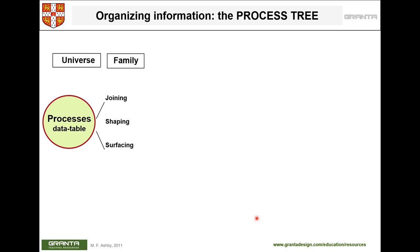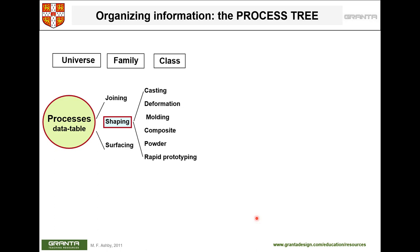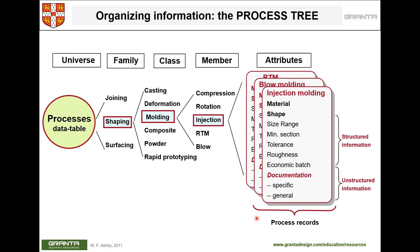Similar to materials, manufacturing processes are organized in a family hierarchy. Under shaping, you have different types of molding: compression, rotational, and injection. In the CES software, selecting injection molding gives you ranges for size, tolerances, and surface roughness, helping you assess whether that process is suitable for your selected material.